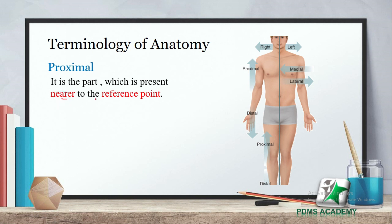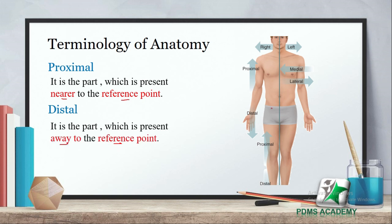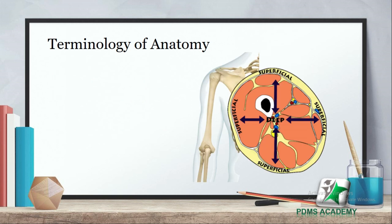Proximal is a part which is present nearer to the reference point; distal is a part which is present away from the reference point. For example، shoulder ایک reference point ہے۔ Humerus جو shoulder joint کے قریب ہے اسے proximal کہتے ہیں، اور hand جو shoulder joint سے دور ہے اسے distal کہتے ہیں۔